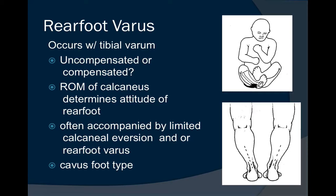It is the uncompensated conditions that often cause a forefoot varus deformity and often a cavus foot type. A lot of this is going to depend upon the range of motion of the calcaneus. If the calcaneus does not have adequate range of motion available through the talocrural joint and the calcaneal cuboid joint, we will not be able to get the first ray all the way down to the ground. This is going to determine how the rear foot sits on the ground.